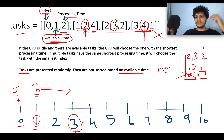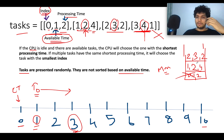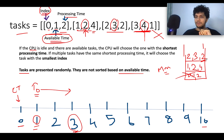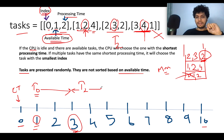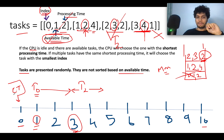At time three, the CPU becomes idle again and asks the min heap for the next task. The task with lower processing time is pulled out — that is task 2 (index 2), with processing time two. So task 2 is executed from time three to five.